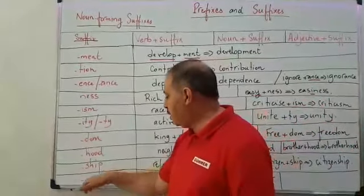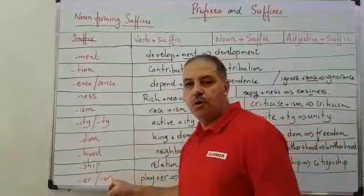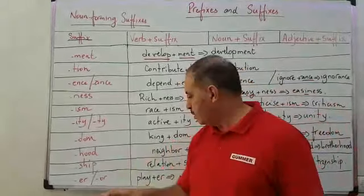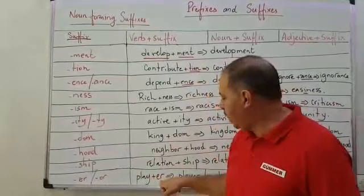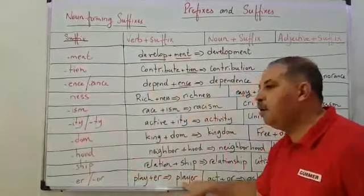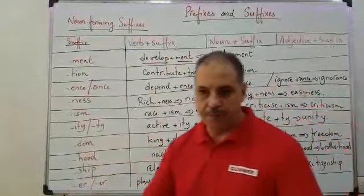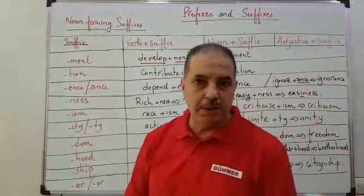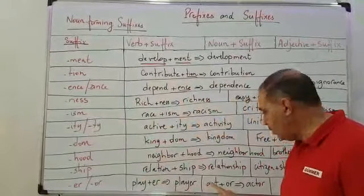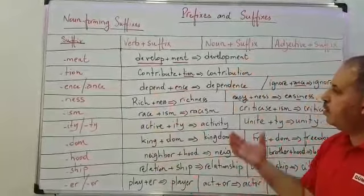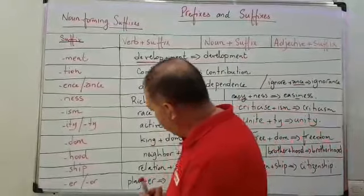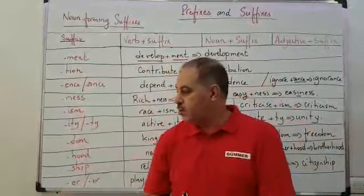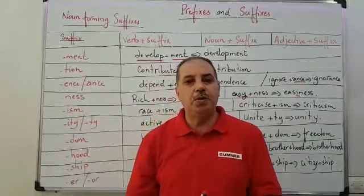We also have the suffixes '-er' and '-or'. For example, 'play' is a verb. 'Play' plus '-er' becomes 'player' — meaning 'al-la'ib'. Another example: 'act' is a verb. 'Act' plus '-or' becomes 'actor' — meaning 'al-mumathil'. These are some suffixes needed to form nouns in English. Next time we're going to talk about how to use these in sentences and in context. Thank you for watching and wish you a nice day.